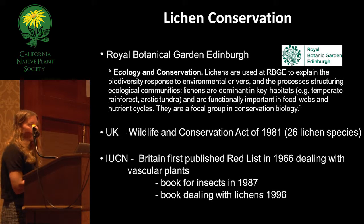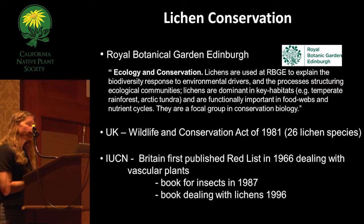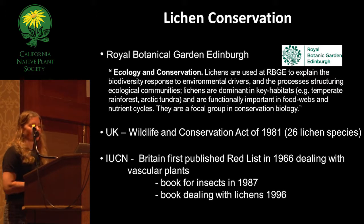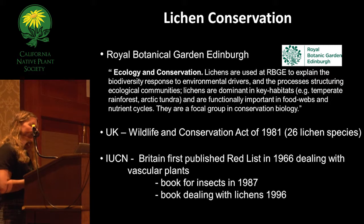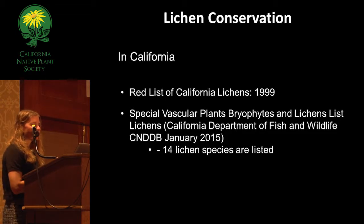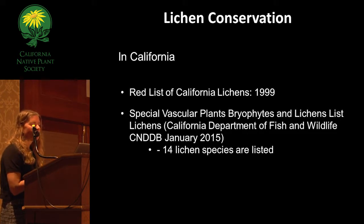The Royal Botanical Garden in Edinburgh has a specific program designated towards conservation of lichens and understanding their ecology. In the UK, they started recognizing the importance of lichens and listing them in the early 1980s, with about 26 different species listed. The IUCN Red List was first published in 1966 and dealt with vascular plants, but not until 1996 did it start to recognize lichens. In California, lichens were first put on the Red List in 1999, and as of 2005 there were 14 species considered sensitive — not a good proportion given there are over 1,800 species of lichen.